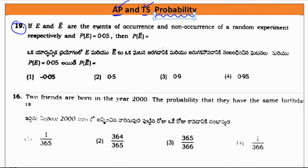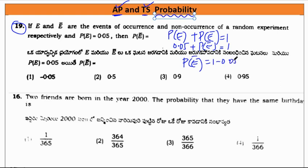So first question, if E and E naught are the events of occurrence and non-occurrence of a random experiment respectively, P of E is 0.05, then P of naught E is. So formula is P of E plus P of naught E is equal to 1. So 0.05 plus P of naught E is equal to 1.